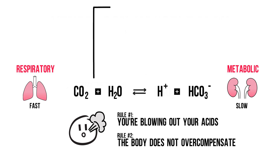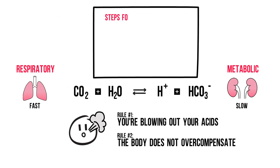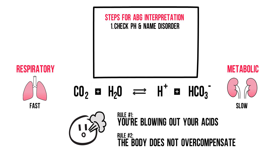Let's go through the steps of the interpretation of a blood gas sample. Step 1: Check pH and name the disorder. Low pH is an acidosis, high pH is an alkalosis. If pH is normal, you're not done yet — it could be a compensated acid-base disorder. Go to step 2.